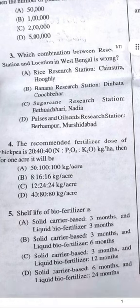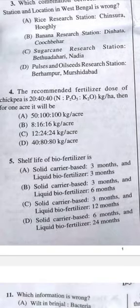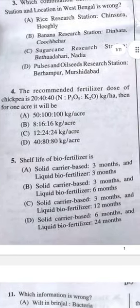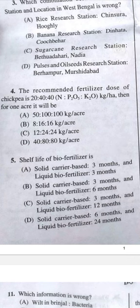Question 4: The recommended fertilizer dose for chickpea is 20:40:40 NPK kg per hectare. For one acre the answer should be B, that is 8:16:16 kg per acre, because one hectare equals 2.5 acres, so we divide by 2.5.